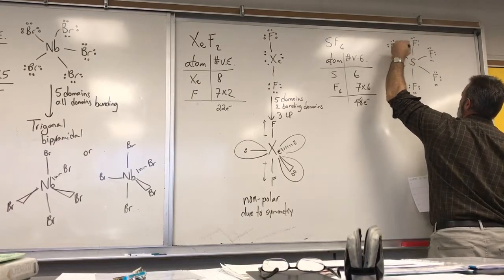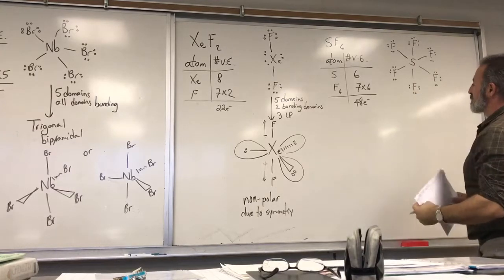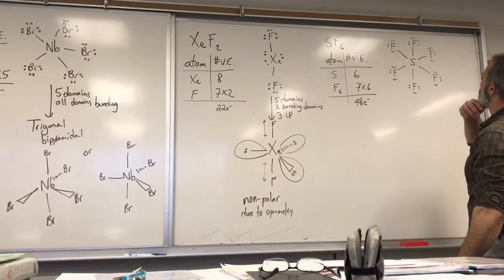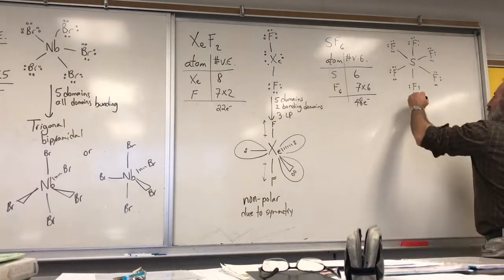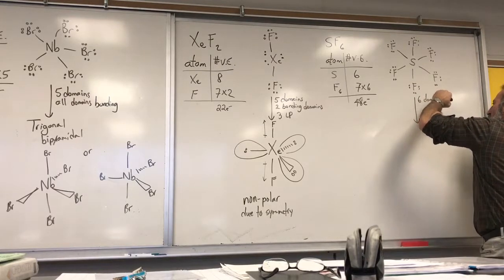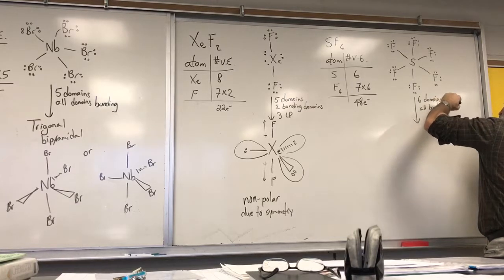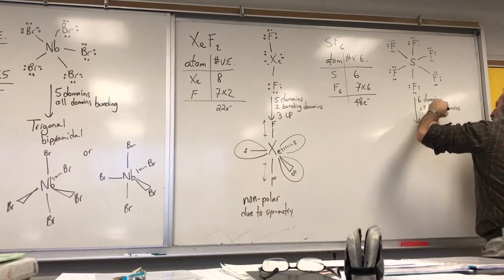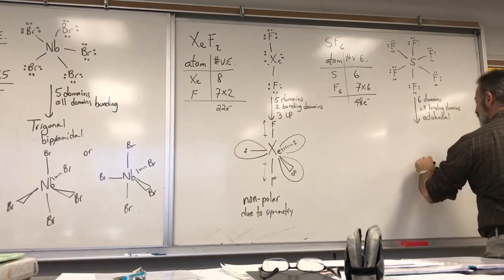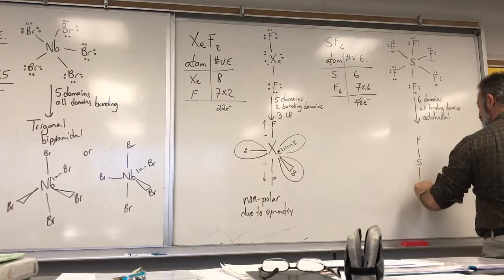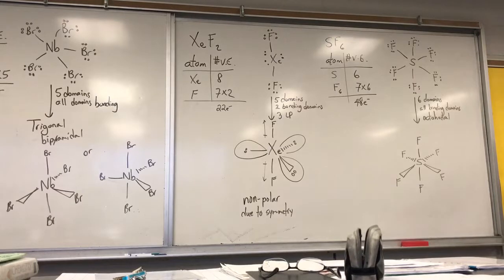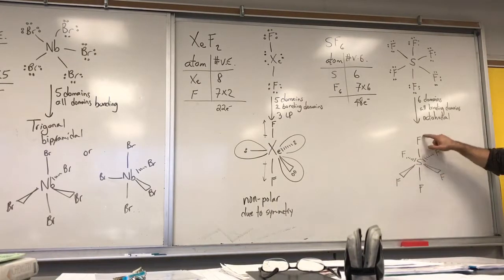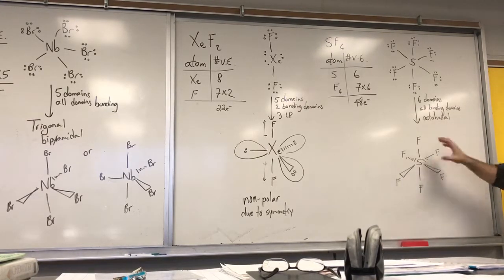That uses up six times six, which is 36, plus 12 more for the bonds, giving 48 electrons — so all valence electrons are accounted for. You have six domains, all bonding, which suggests an octahedral geometry. Drawing it: the sulfur atom is the central atom, one fluorine up, one down, two fluorines coming out of the plane of the blackboard, and two going behind. You can imagine the sulfur atom as the center of a cube, with the fluorines touching the middle of each face — that is octahedral geometry.